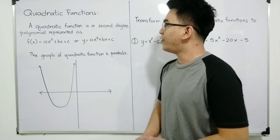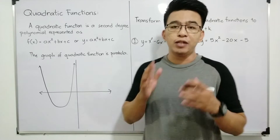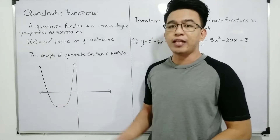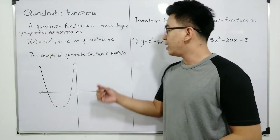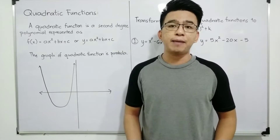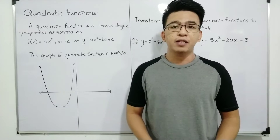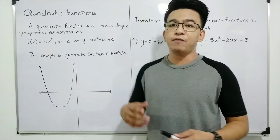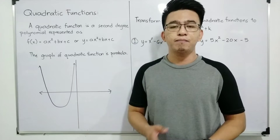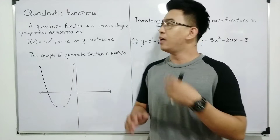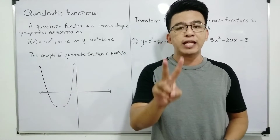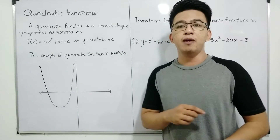Another thing about the quadratic function that you need to understand or to know is that the graph of a quadratic function is a parabola. Parabola is a u-shaped curve where we have four different orientations of parabola in mathematics. But in this case, for the quadratic functions, you only have two orientations of parabola.